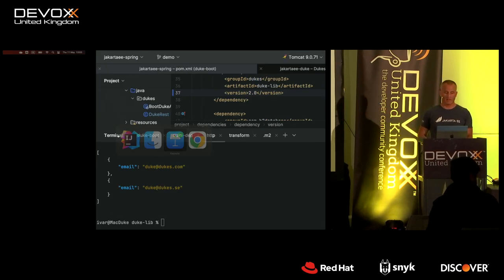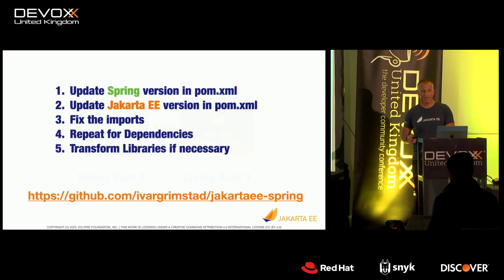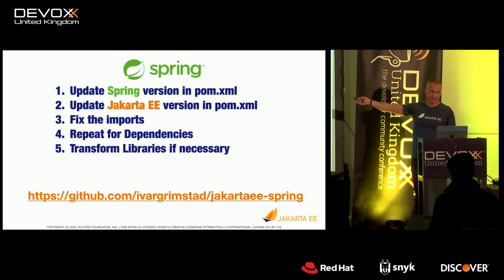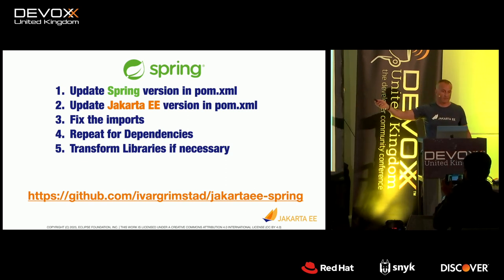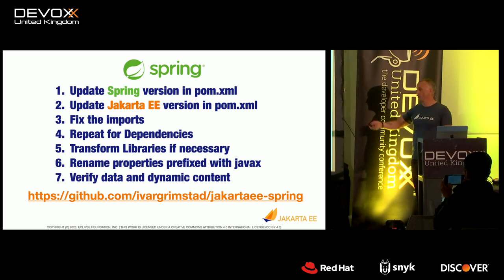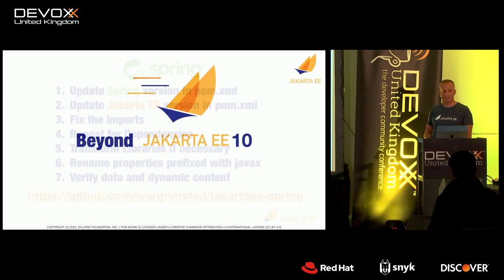With Spring it's essentially the same steps as Jakarta EE: update the Spring version, update the Jakarta versions, fix the imports, then repeat for all your dependencies, and use the transformer for libraries you don't have source for. There may also be javax properties to fix, and dynamic content to verify. You see — it's more or less the same steps as it would be for a Jakarta EE application.